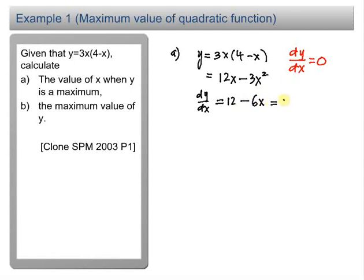Then, you put this equal to 0. You have 6x equal to 12, x equal to 12 divided by 6. So, the answer x equal to 2.